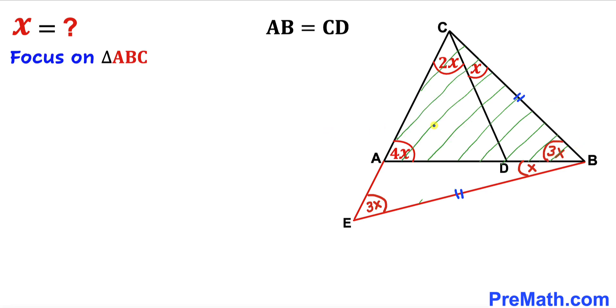Here's our final step. Let's focus on triangle ABC and recall the triangle sum theorem. The sum of three interior angles in a triangle is always 180 degrees. Therefore, in triangle ABC, the sum of all angles must be 180 degrees. We know that the combined angle ACB is X plus 2X, which equals 3X.